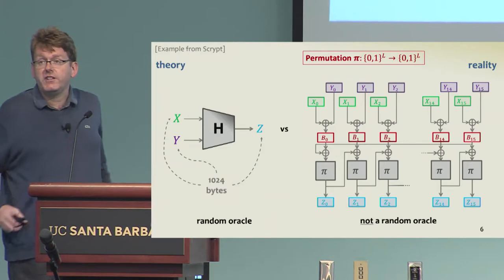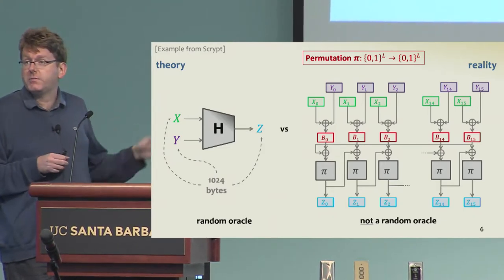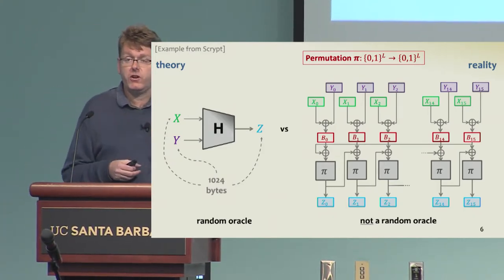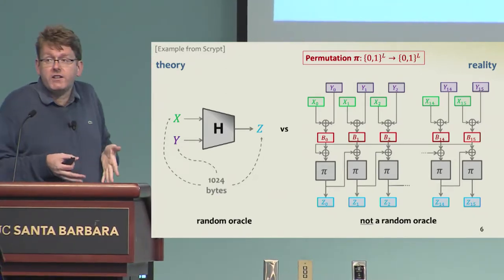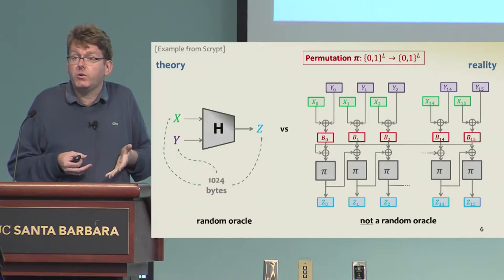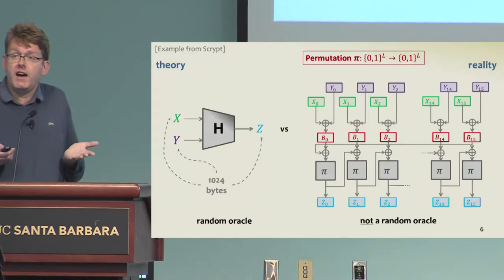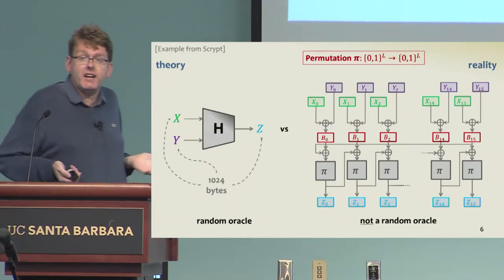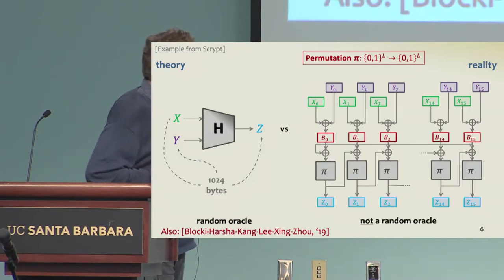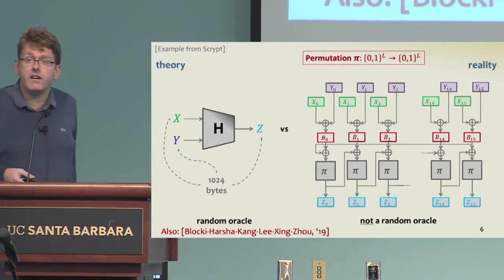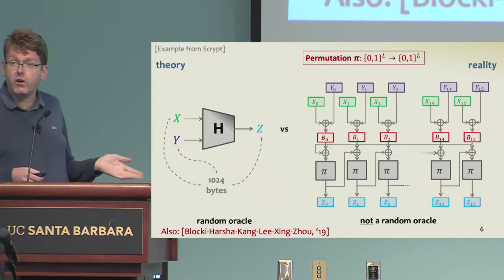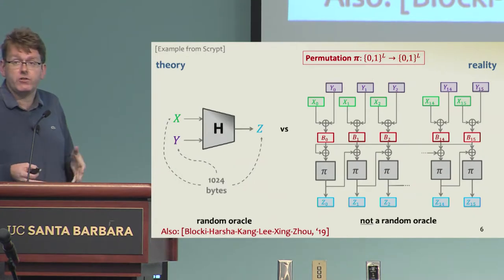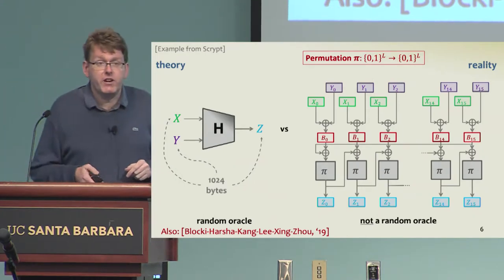These designs are usually not random oracles at all, even if you assume that the underlying primitive behaves ideally. This is an example of a design inspired from what Scrypt does, but I could have put here the design of Argon2. We would like to understand what's happening under the hood here. It's not clear whether existing analysis applies to actual constructions.